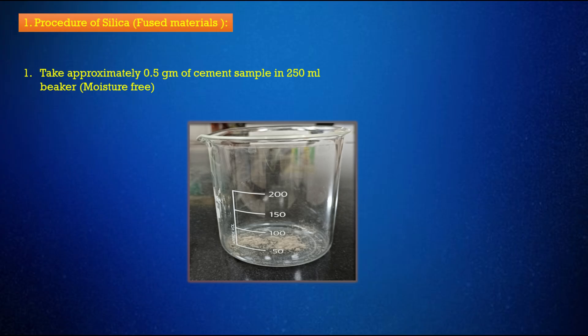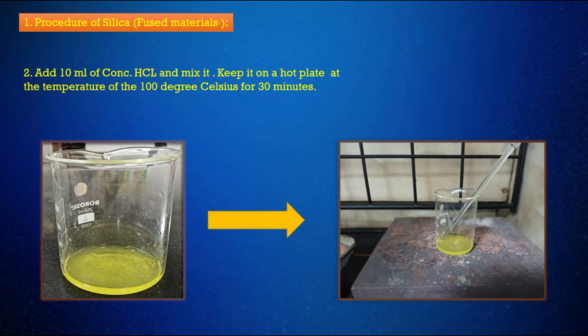Step 1: Take approximately 0.5 gm of moisture-free cement sample in a 250 milliliters beaker. Step 2: Add 10 milliliters of concentrated HCL and mix it. Keep it on a hot plate at a temperature of 100 degrees Celsius for 30 minutes.